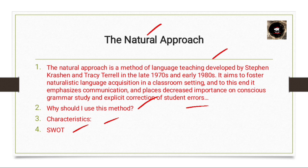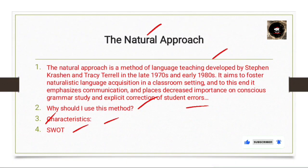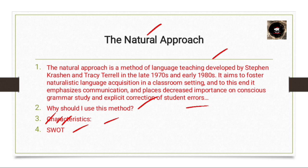As discussed in previous videos, we will also look at the SWOT analysis for the natural approach. S stands for strengths: speech production comes slowly and is never forced, and students feel comfortable. W stands for weaknesses: it does not develop the four skills — listening, speaking, reading, and writing — and it is too easy for teachers. O stands for opportunities: teachers must correct students' mistakes. T stands for threats: instruction must be centered on all four skills — listening, speaking, reading, and writing.